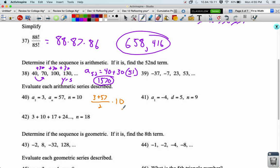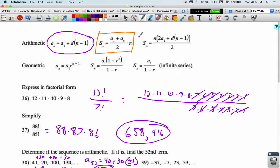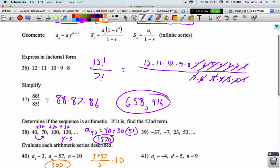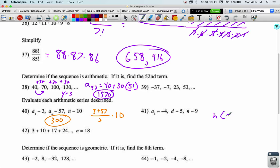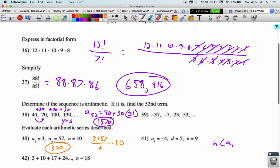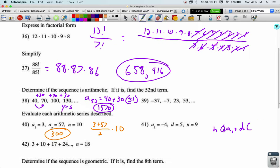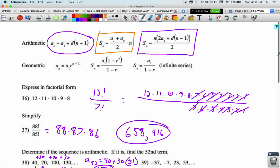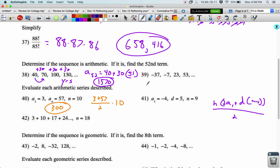In 41, we're given first term, common difference, and number of terms. To find this one, we can use this first formula, or we can use the very first formula to find our last term and then use the other formula. It's n times a sub 1, no, 2 a sub 1 plus d times n minus 1, all over 2.